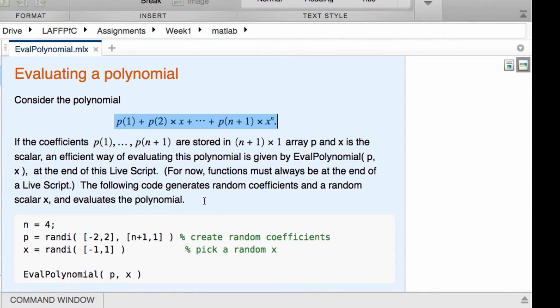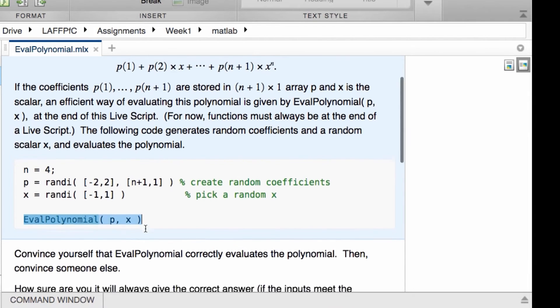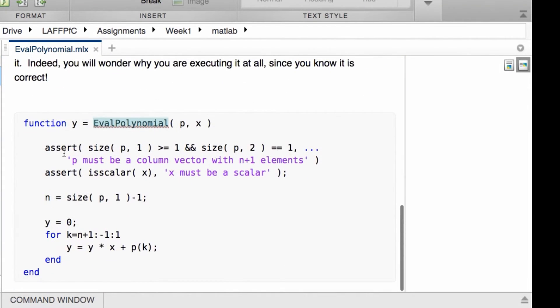And then down here is a little script that allows you to test the particular function that is called evalpolynomial, where you pass in the array p and the point x at which to evaluate. And that particular function is defined at the end of the LiveScript. For the moment, functions always have to appear at the end of the LiveScript.